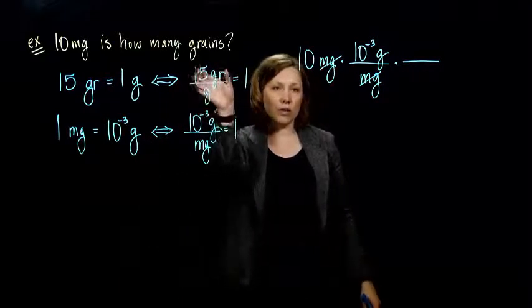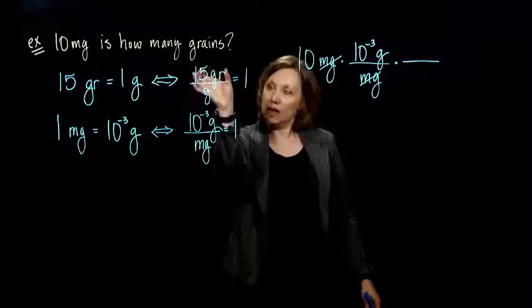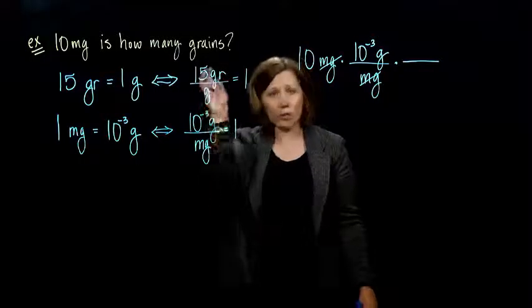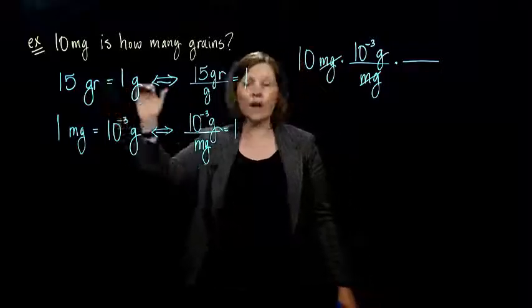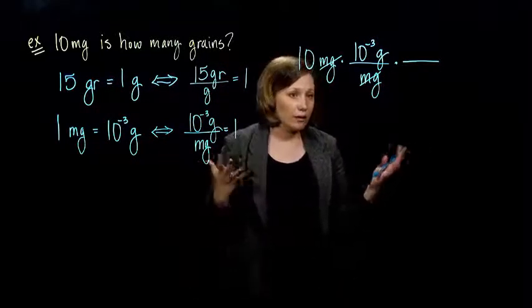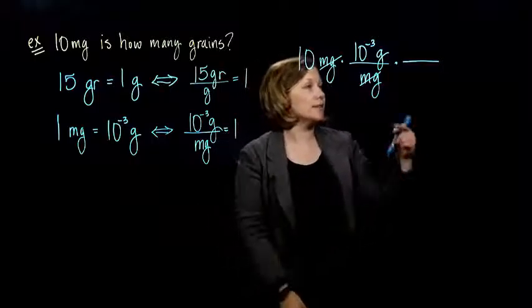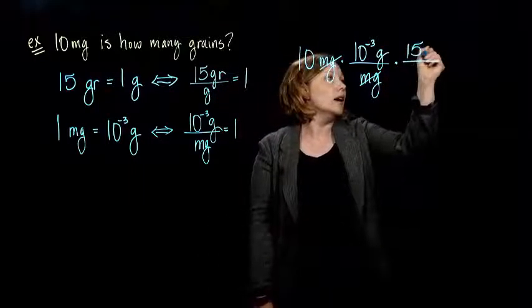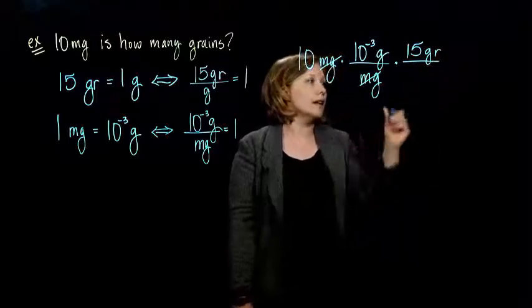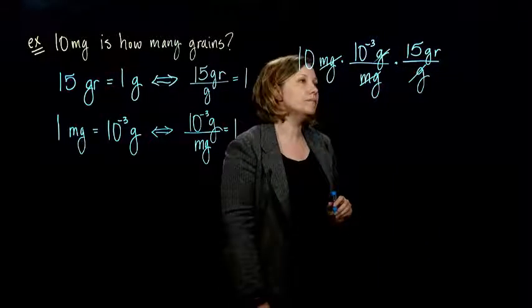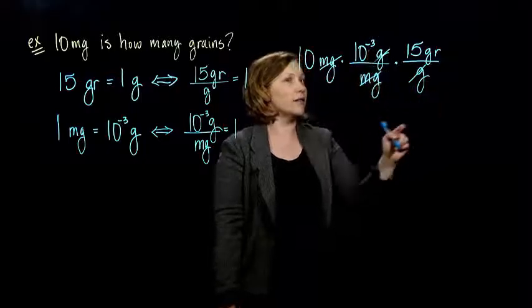So, you could think of this relationship as one divided by the other or as a proportion, right? Or you can think of this equality and you're turning it into that factor there. Either way you think about it, however your brain wraps around it, either way works. So, I have 15 grains per gram and so my grams are going to cancel. And so, now my milligrams are gone, my grams are gone.